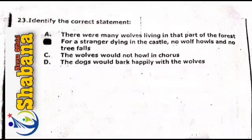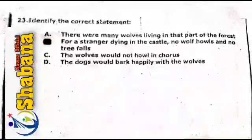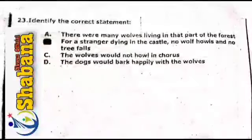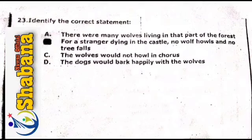Question number 23: identify the correct statement. Option A: there were many wolves living in that part of the forest. Option B: for a stranger dying in the castle, no wolf howls and no tree falls. Option C: the wolves would not howl in chorus. Option D: the dogs would bark happily with the wolves. The correct answer is option number B.